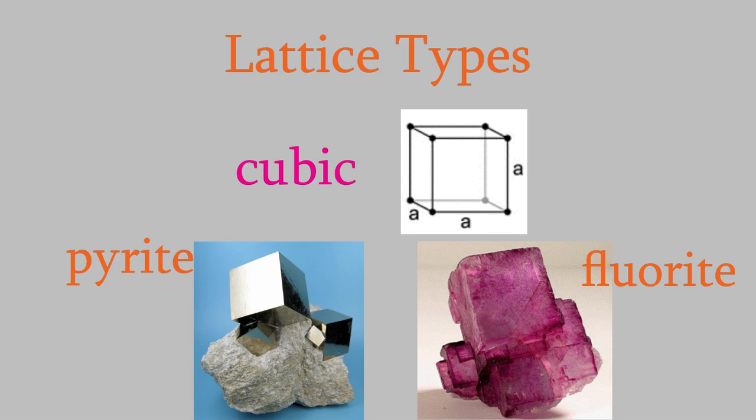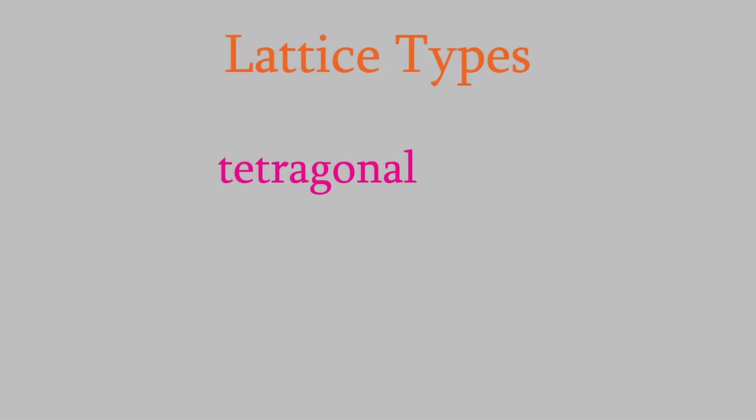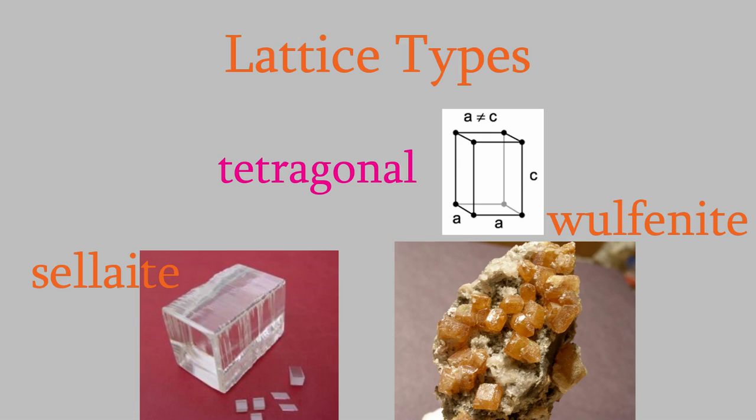The next lattice type is called a tetragonal lattice. In this one, the angles are all 90 degrees again, but only two edges of the unit cell have the same length. The third edge can be longer or shorter than the other two.